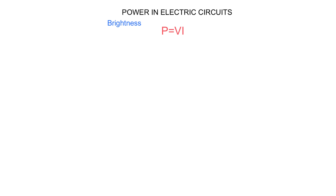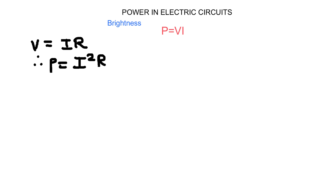In a series circuit we normally have the current, but it's more complicated to get the potential difference across each resistor. So it's quite handy to replace V in this formula and work with a formula that has no V, but only the resistance of the resistor and the current. Replacing V with IR, we end with the formula P equals I squared R.